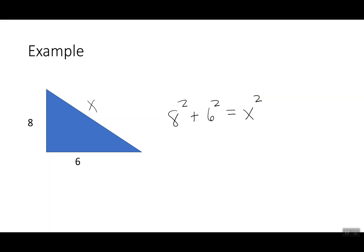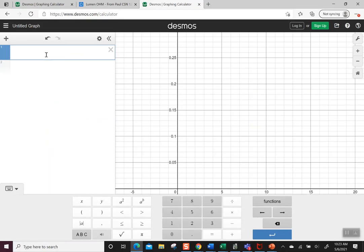All right, so let's go over to Desmos to start looking at this. Okay, so we had 8 squared, so I'm going to push 8, and you can square it with the key, and then we're going to say plus, and then I have 6 squared. Okay, so that says 100.